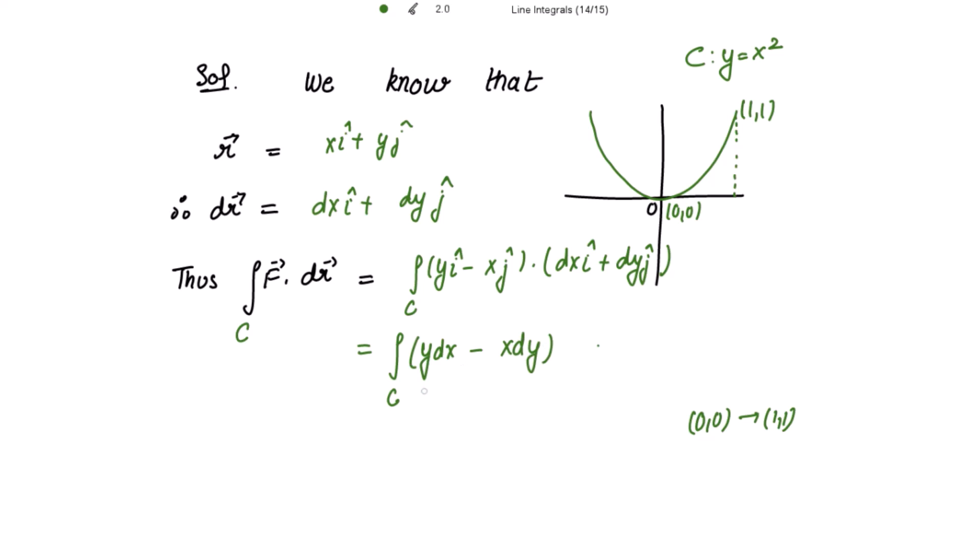Now you can change this expression completely into x or into y, it is your choice. Choose the one which is easier. As it is given that y equal to x square, this is your curve, so I can choose y equal to x square which is easier.